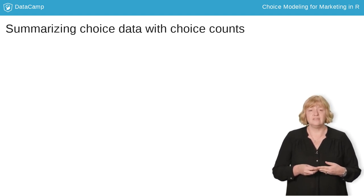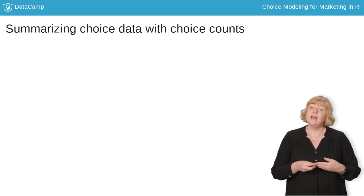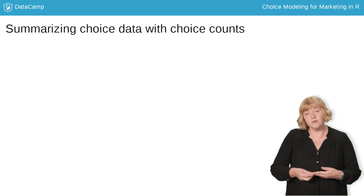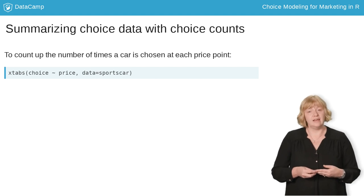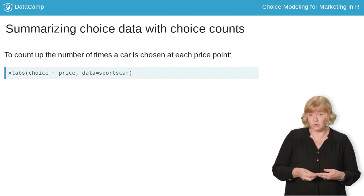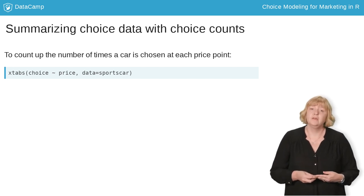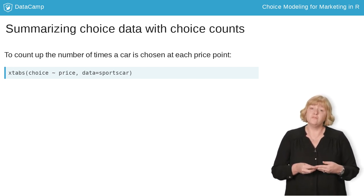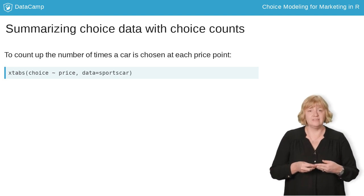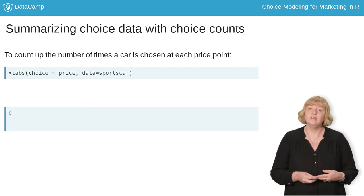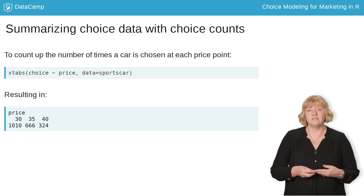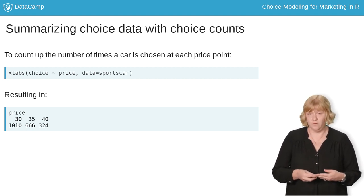One way to get a sense for this is to count up the number of times a $30,000 sports car is chosen in the data and compare that to the number of times a $35,000 or $40,000 sports car is chosen. We can do this using the function XTabs, which takes two inputs: a formula and a data frame. The formula says sum up the choice variable separately for each level of price. Because choice is a zero or one indicating whether that alternative is chosen, the output is a count of the number of times a sports car was chosen at $30,000, $35,000, and $40,000.